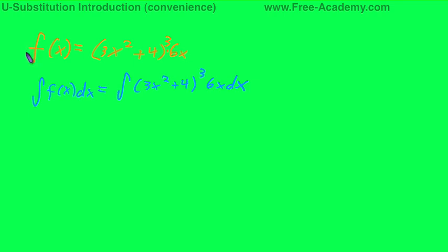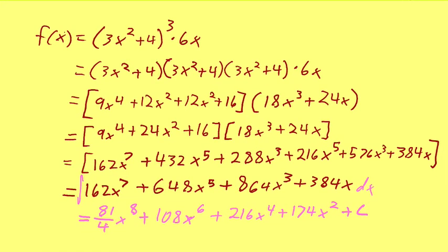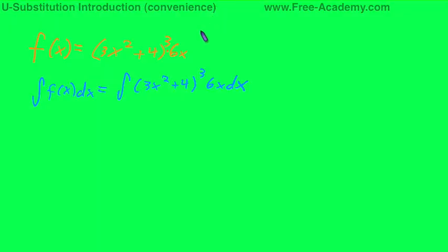In this equation, we have f of x equals, in parentheses, 3x squared plus 4, all raised to the third power, and then multiplied by 6x. We can multiply that all out and integrate it, which I did the unpleasant exercise of doing beforehand. You can pause this video, work through it yourself. It's not very much fun, but it definitely is correct. But we want an easier way of doing that. So that's u-substitution for convenience.